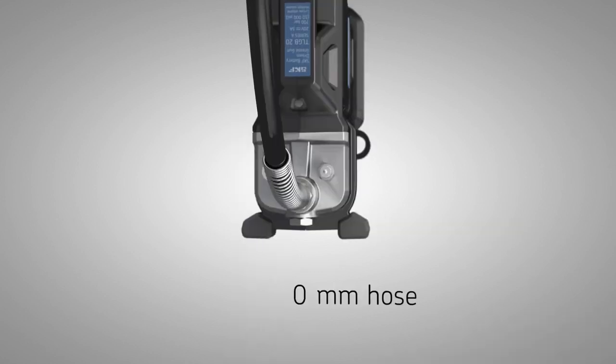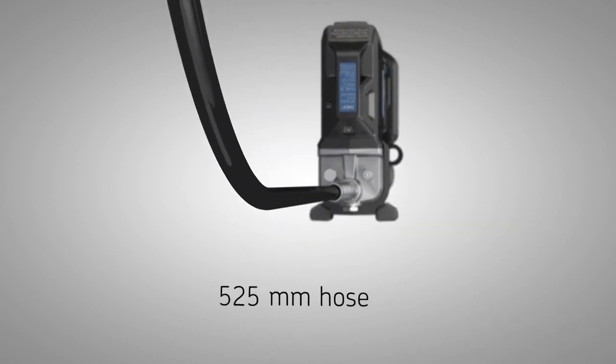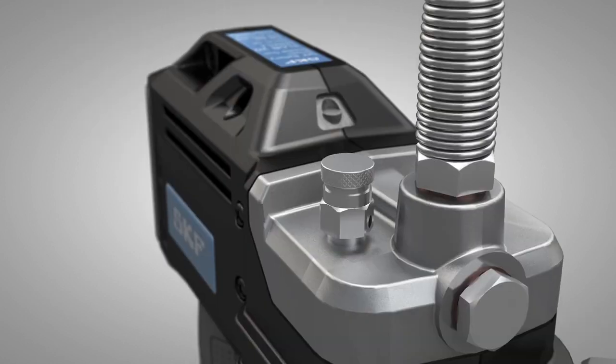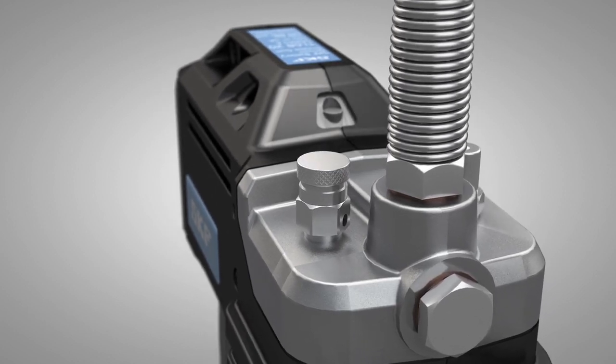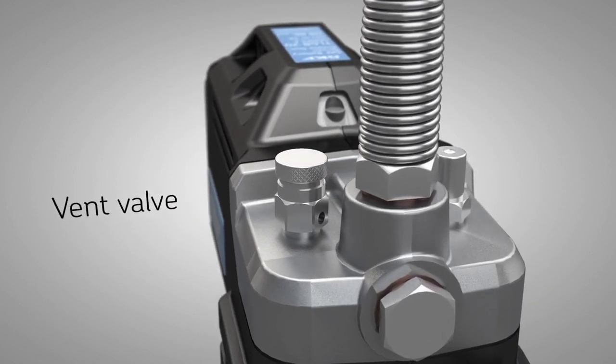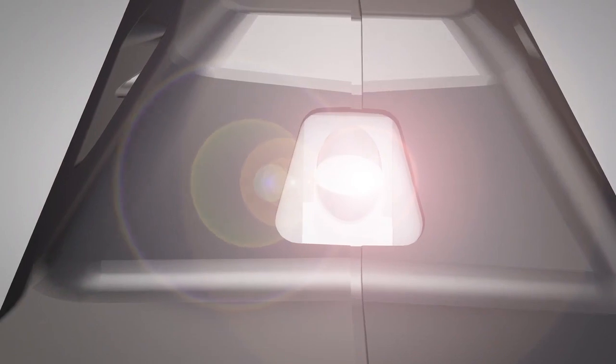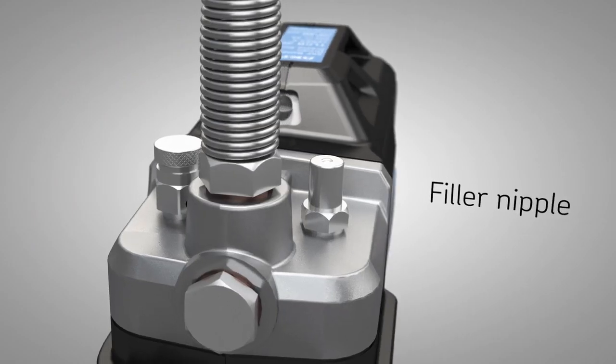Spring guards preserve the flex hose life by preventing the hose from kinking. The gun is equipped with a vent valve for trouble-free priming, a bright LED light and a filler nipple.